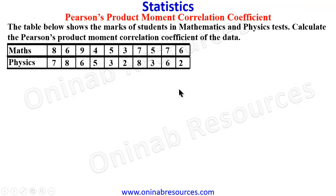So we start with our problem. The table below shows the marks of students in mathematics and physics tests. Calculate the Pearson's product-moment correlation coefficient of the data.